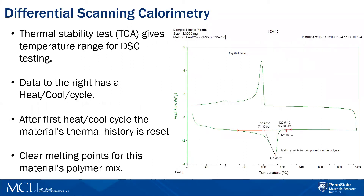To continue the thermal analysis on our plastic pipette from earlier, I have taken the information from our TGA curve and set our temperature range. We're going to go from room temperature to 200 degrees Celsius. It is very common in DSC to do what is known as a heat-cool-heat cycle. In this sample, I only heated it and cooled it, and did not reheat.